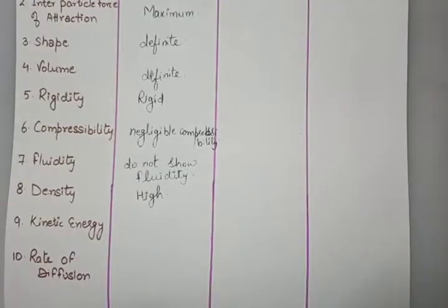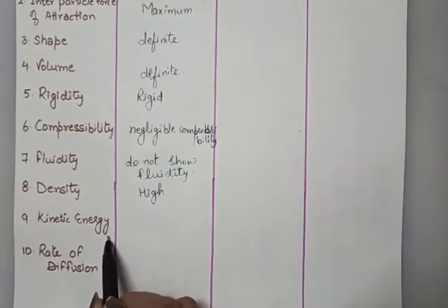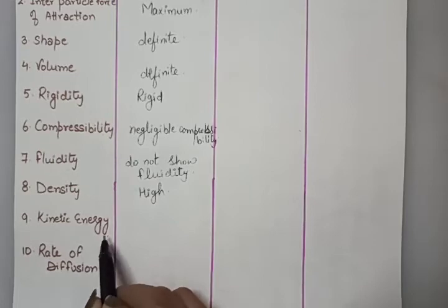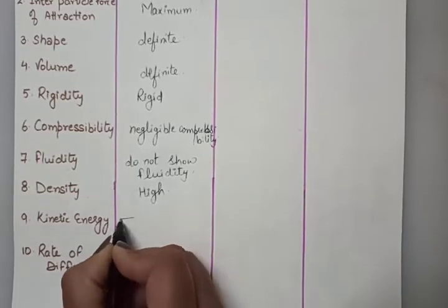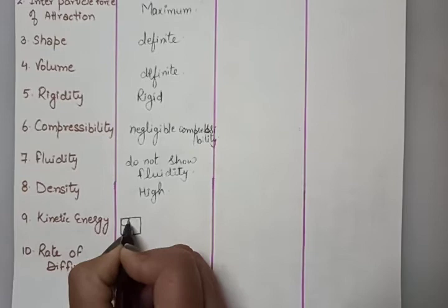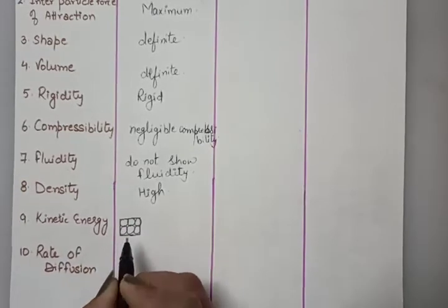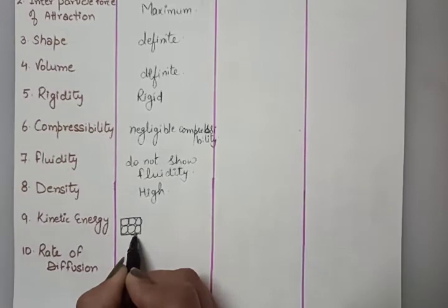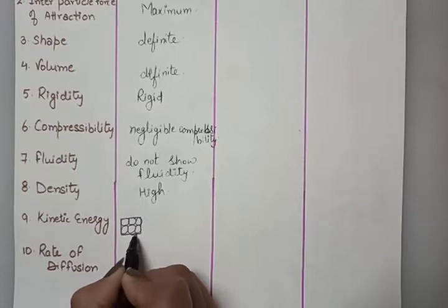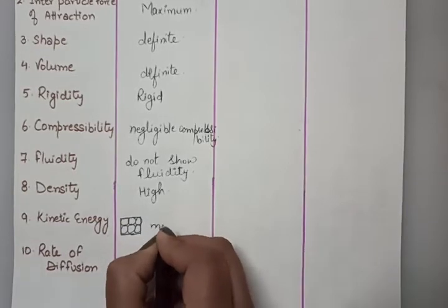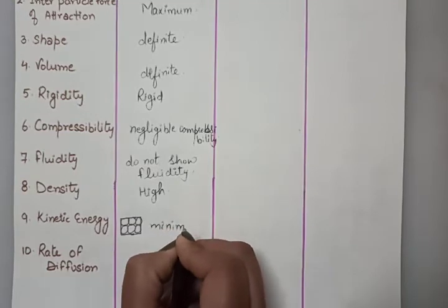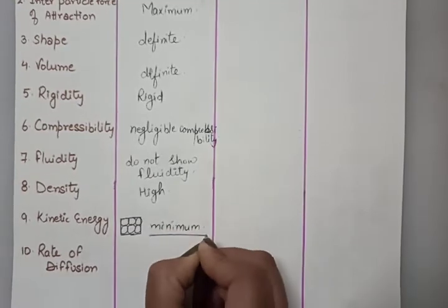Next is kinetic energy. As the particles in solids are tightly packed, there is very less space between them, so they are not able to move. That means they have minimum kinetic energy.